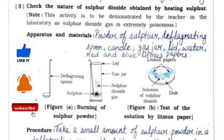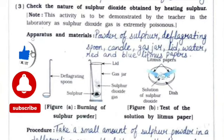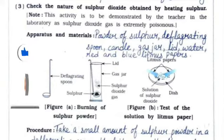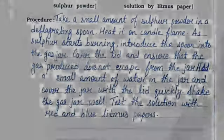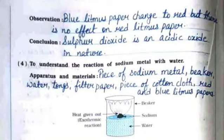Activity 3: to check the nature of sulfur dioxide obtained by heating sulfur. Materials: sulfur powder, deflagrating spoon, candle, gas jar, lid, water, red and blue litmus papers. Procedure: heat sulfur powder in a deflagrating spoon on a candle flame; when it starts burning introduce the spoon into the gas jar and cover with the lid; add a small amount of water, cover, and shake well; test the solution with litmus papers. Observation: blue litmus paper changed to red; no effect on red litmus paper. Conclusion: sulfur dioxide is an acidic oxide.